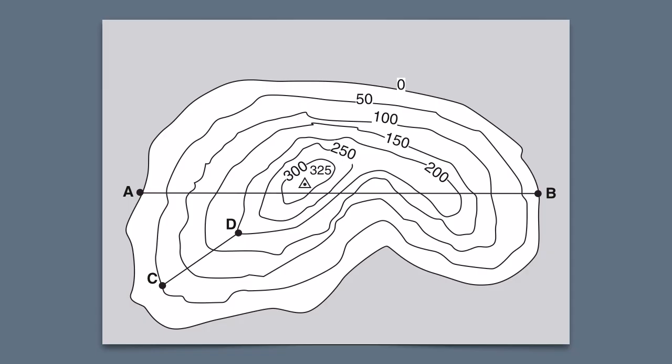Why? Because point D is located on the 200-foot contour line. So what that means is we have an island here with the highest point right by that triangle, which is labeled 325.